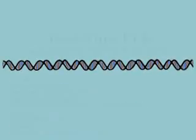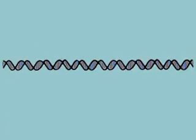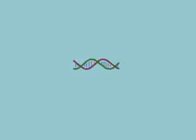To understand how amplified PCR products, also called amplicons, are detected in real-time, let's first review the events that occur during a normal cycle of the PCR reaction.